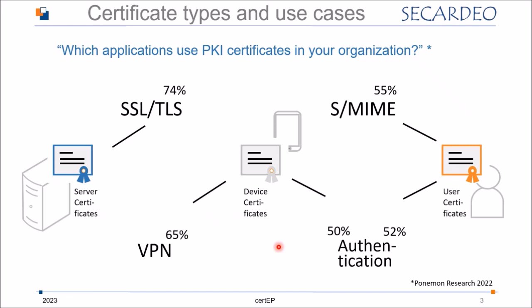There are basically three types of certificates that we deal with in an enterprise. These are service certificates that are needed for secure communication using the SSL/TLS protocol — 74% tell us this is in place in their organization. Then we have device certificates that are used for VPN connections or for device authentication. And then we have user certificates that are used primarily for S/MIME email encryption and signature and also for user authentication.